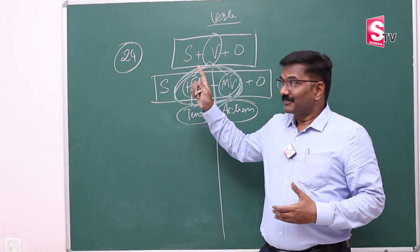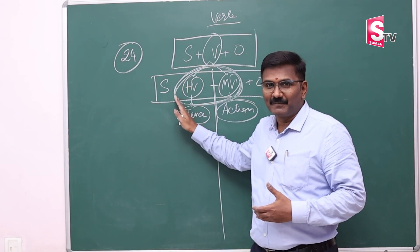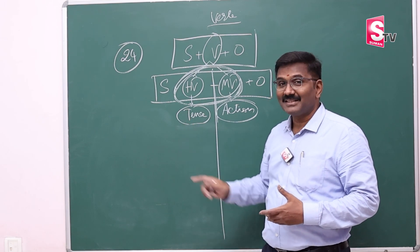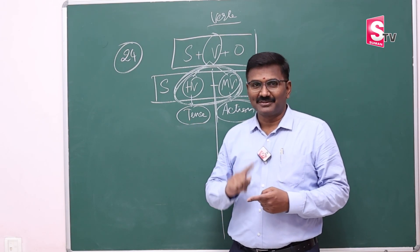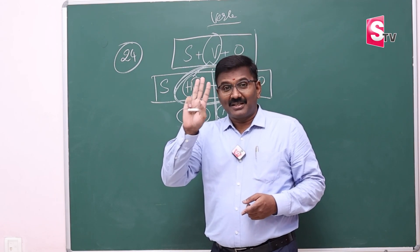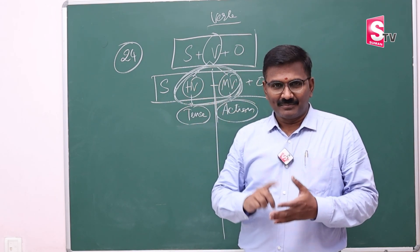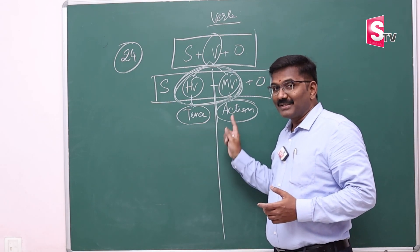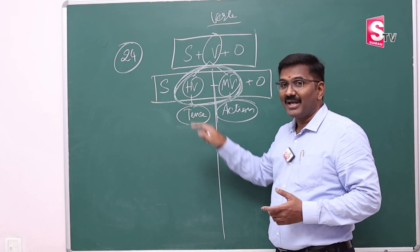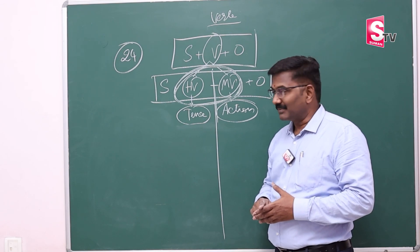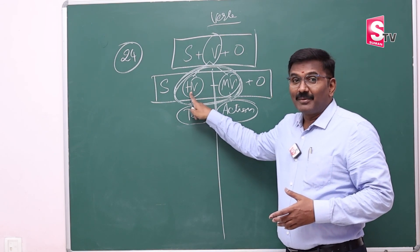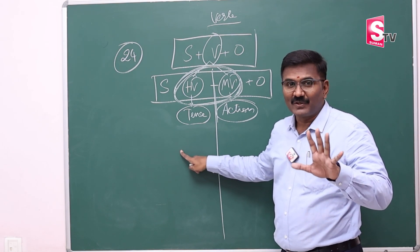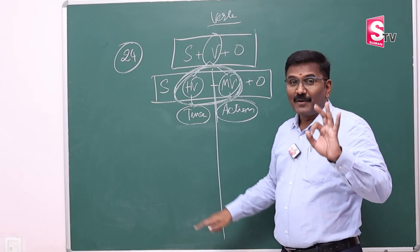In the previous class, we started verbs. We discussed helping verbs — a helping verb denotes tense, and tense means time, the time of the action. There are three tenses basically: present tense, past tense, and future tense. Whether an action belongs to present, past, or future depends upon the helping verb. So we must learn about 24 helping verbs.